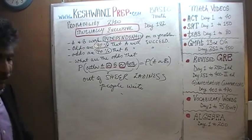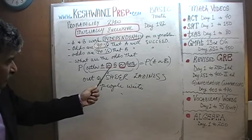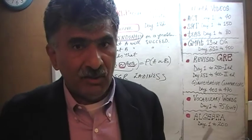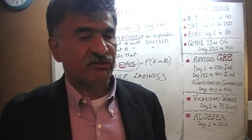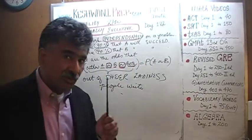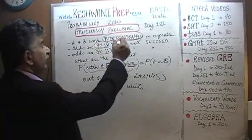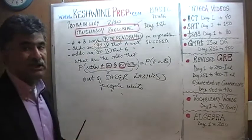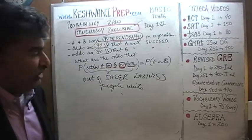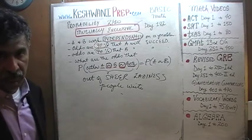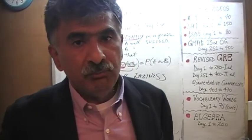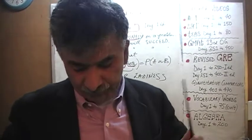To answer this question — what are the odds that either A or B or they may both succeed — before we can answer that, we have to know whether or not the events are mutually exclusive. We must determine whether or not the events are mutually exclusive before we can answer this question. So what does it mean for two events to be mutually exclusive? Let's find out.